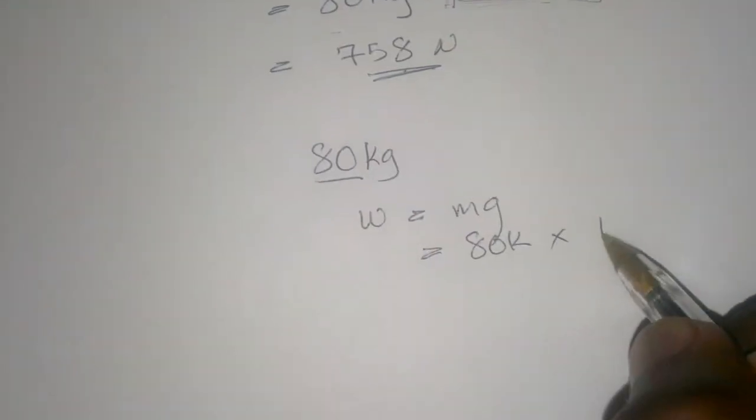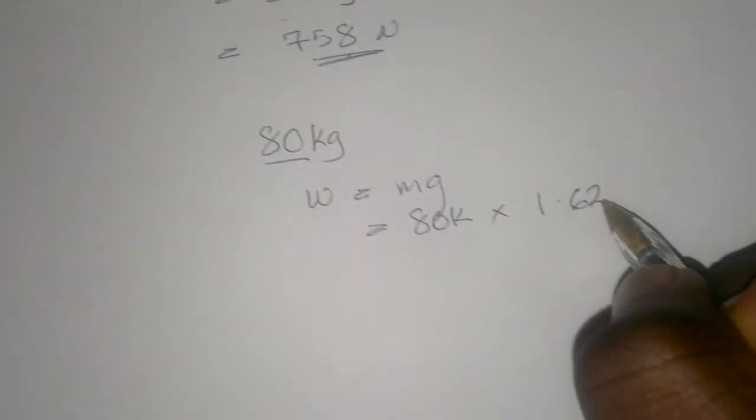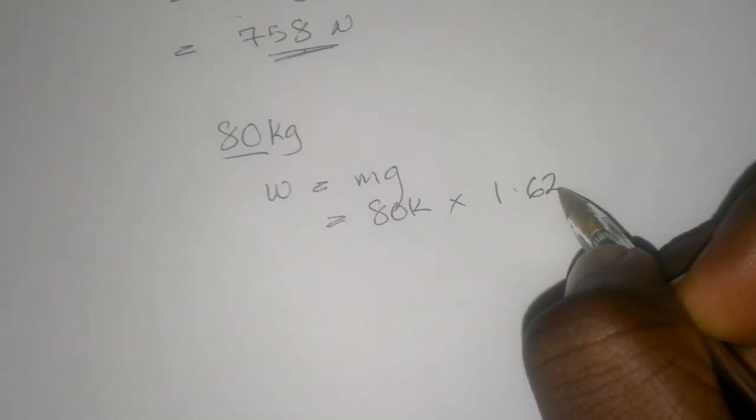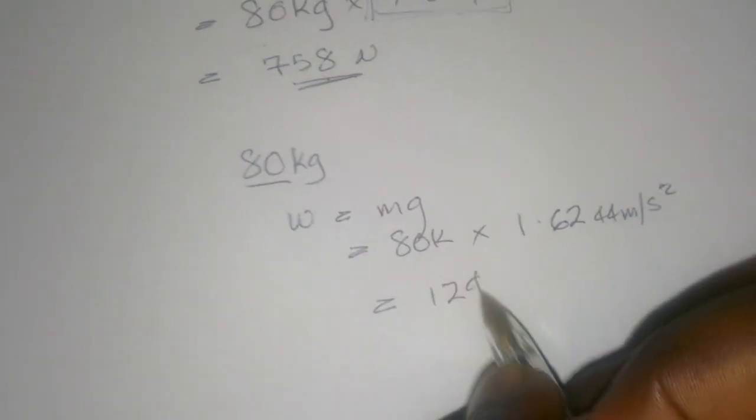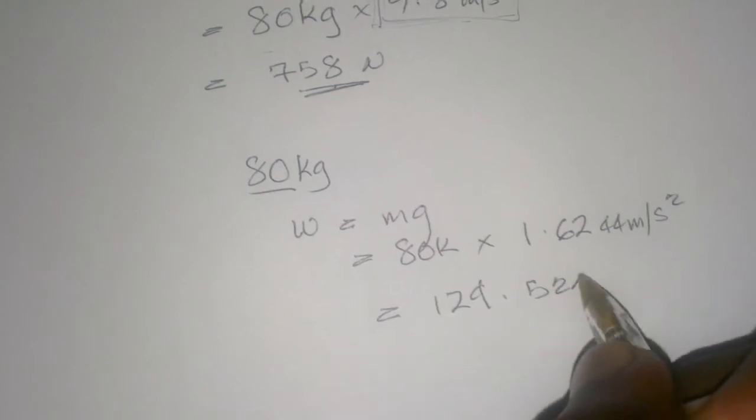If I went to the moon, which has a gravitational constant of 1.6244 meters per second squared, I would weigh 129.52 Newtons.